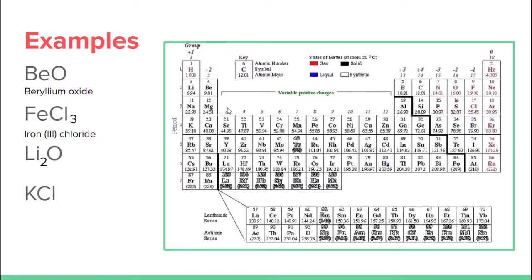For lithium and oxygen: there are two lithiums giving plus two, and oxygen is negative two — they balance out. It's simply lithium oxide. For KCl: potassium has a charge of plus one and chlorine has a charge of negative one. Taking the metal and the non-metal with its ending changed to -ide gives us potassium chloride.